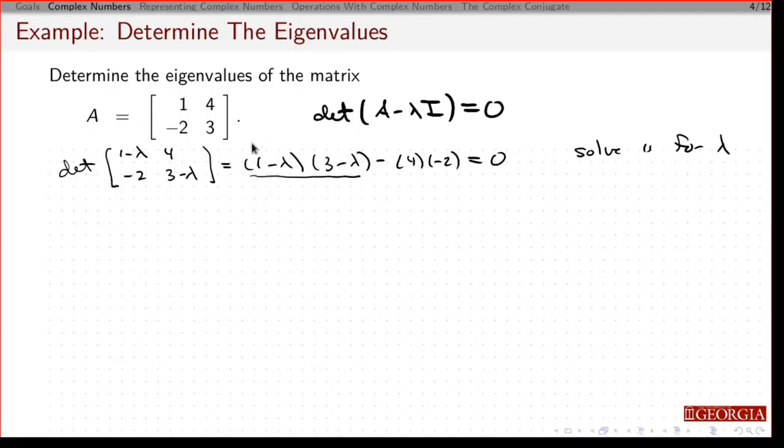So I'm going to FOIL that out. I'm going to get 1 times 3, minus 3 times lambda, plus 1 times minus lambda, plus minus lambda squared. That should be quantity squared. This is going to be plus 8 equals 0. So I'm going to get lambda squared minus 4 lambda plus 11 equals 0. I can't immediately see how to factor that, so let's just go to the quadratic equation. Minus a minus 4 for the b. This is going to be minus 4 squared, and I'm going to have minus 4 times 11 times 1, all over 2 times 1.